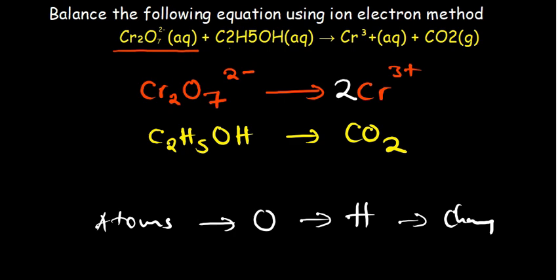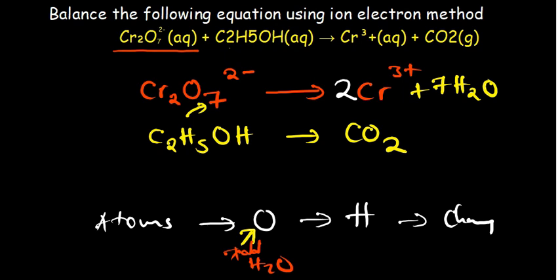We've balanced the chromium atoms. Now moving to oxygen: we have seven oxygen atoms, so we balance oxygen by adding seven water molecules to the right-hand side. Those seven water molecules bring seven oxygen atoms. After introducing water, we now need to balance hydrogen — two times seven gives 14, so we add 14 hydrogen ions on the left-hand side. The first half reaction is now atom-balanced.